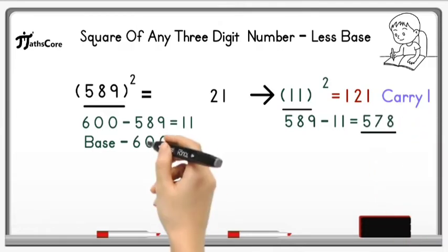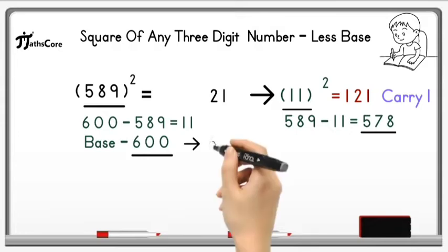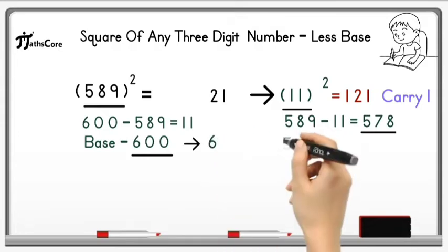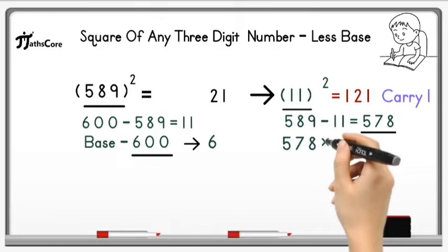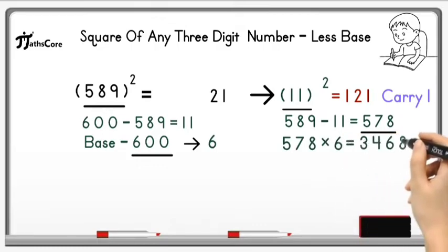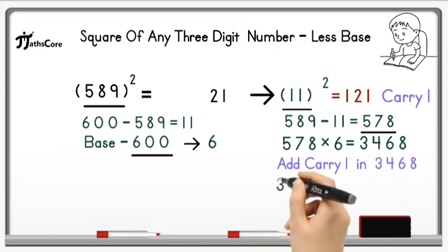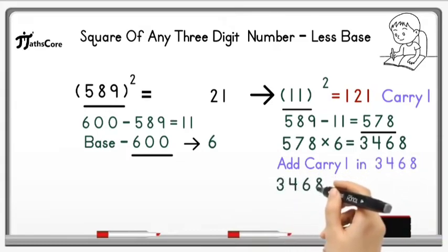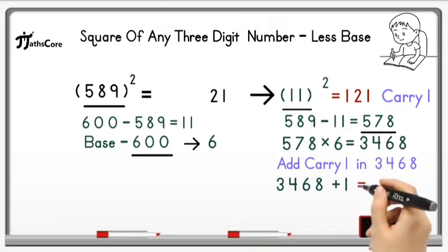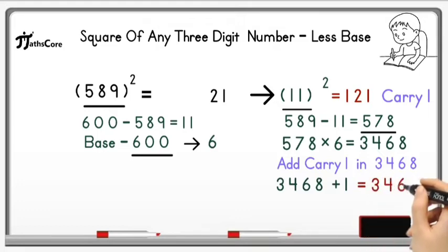Now multiply 578 with base number which is 600. But instead of 600 we have to write down 6 here. So 578 multiply by 6 is equal to 3468. Now add this carry 1 in 3468.